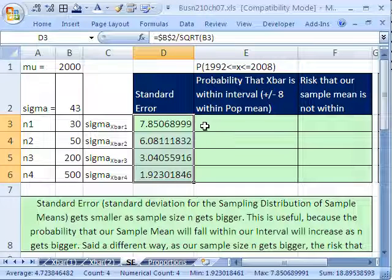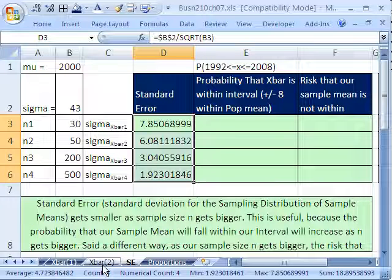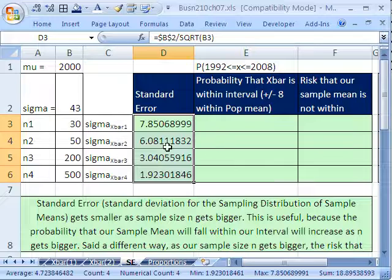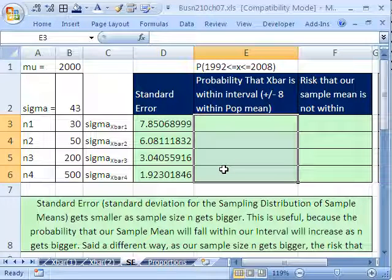Now let's see what happens to the probability. Because in our last video, we actually changed our n and saw that the probability dramatically increased given the same interval. So let's go ahead and do that here.